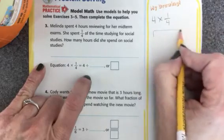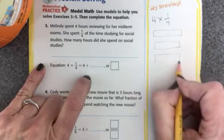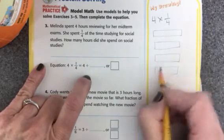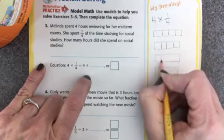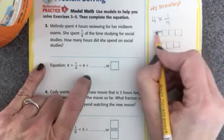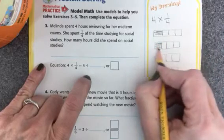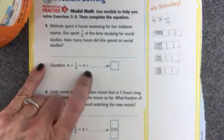So I make a model. Okay, here's my model. This is going to be fourths, fours, four times, and I color in one-fourth. One-fourth, one-fourth, one-fourth, and one-fourth.